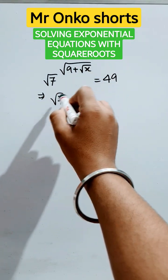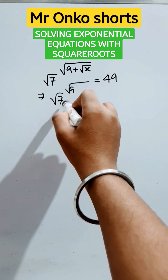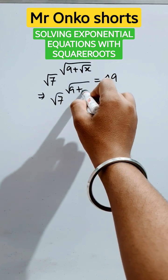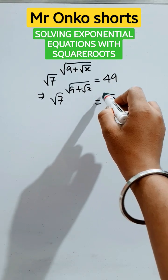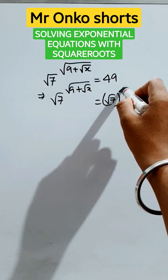So, let's solve this quickly. This is root over of 7 raised to the power root over 9 plus root x equals to, now 49 can be written in this form, that is root 7 whole to the power 4.